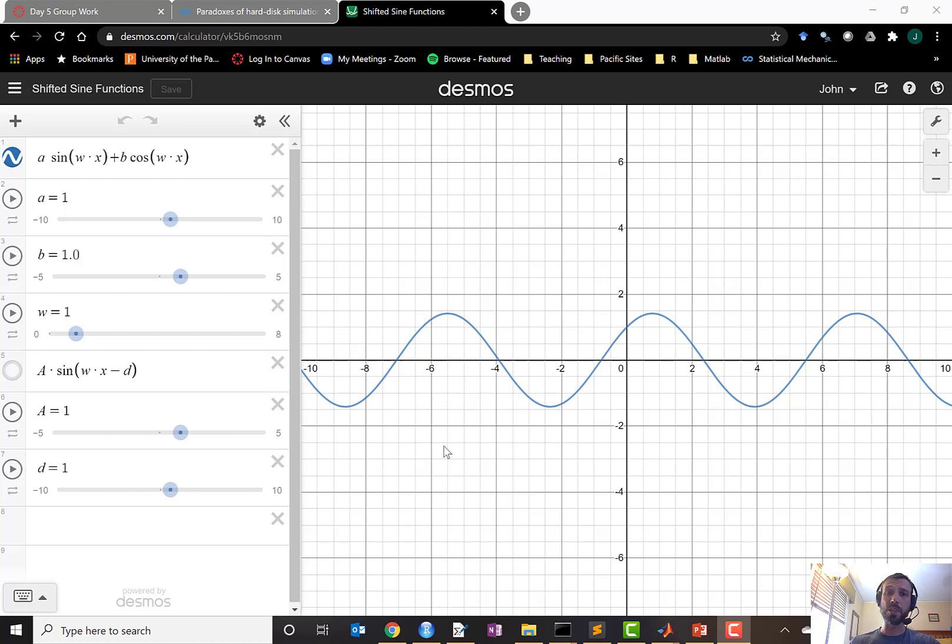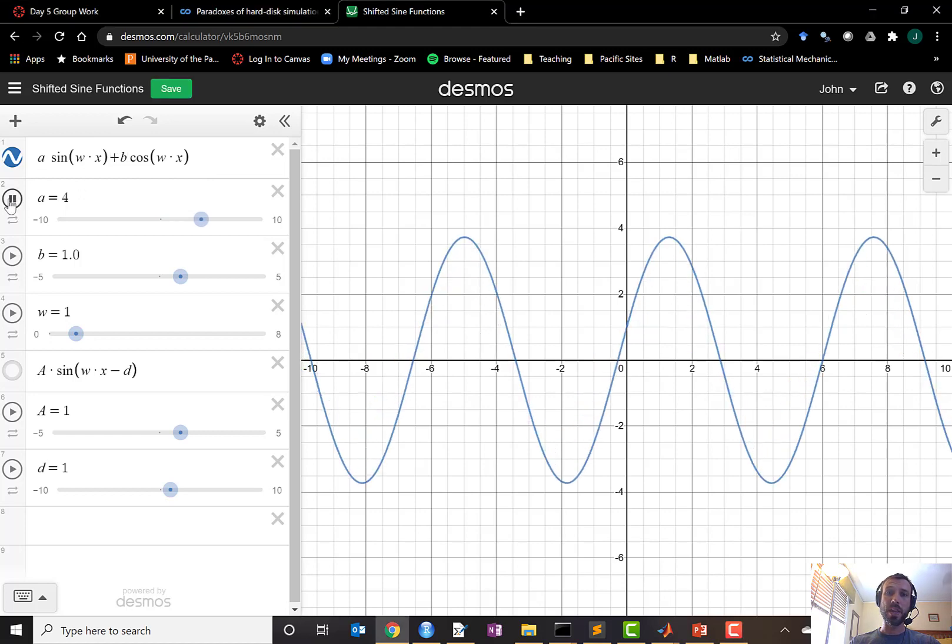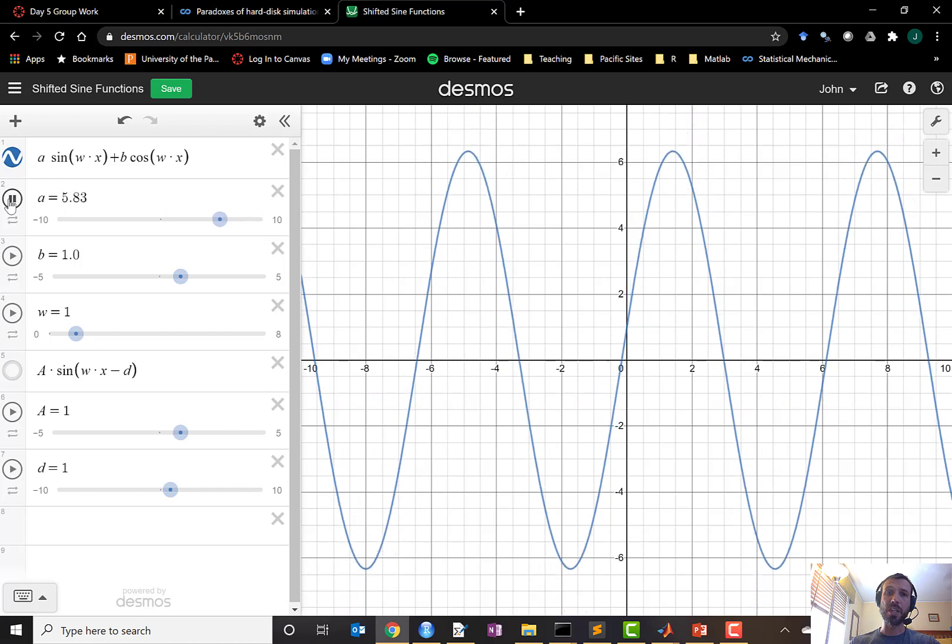Now the graph before us in Desmos shows the function a sin(wx) + b cos(wx). We know in this formula that if I vary the coefficient a of sine, then we see the amplitude will increase and decrease with a.